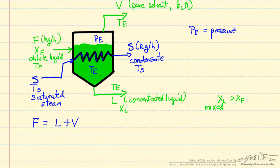And then we can do a mass balance on the solute, the solids, so the mass fraction in the feed times the flow rate. The only place the solids leave are in the liquid phase, the mass fraction of the liquid times the mass flow rate of the liquid leaving.